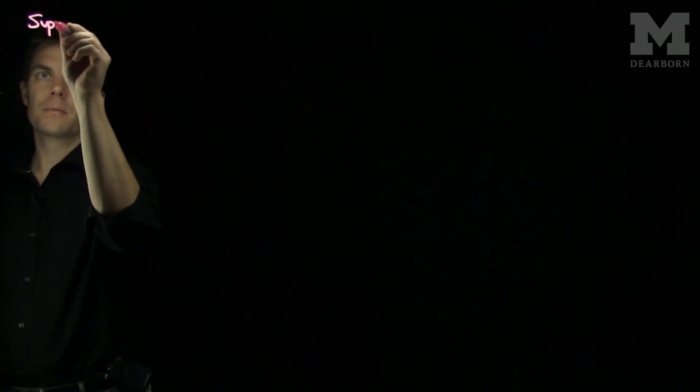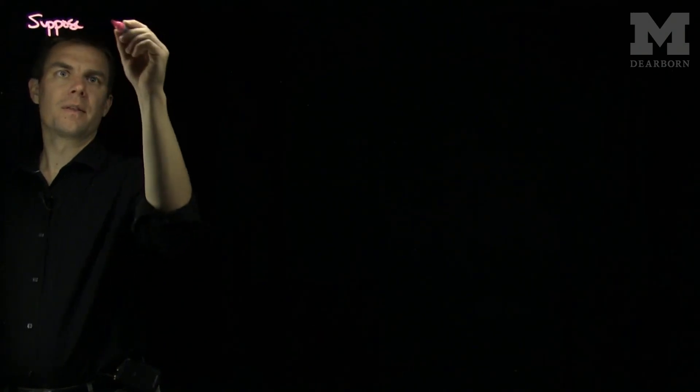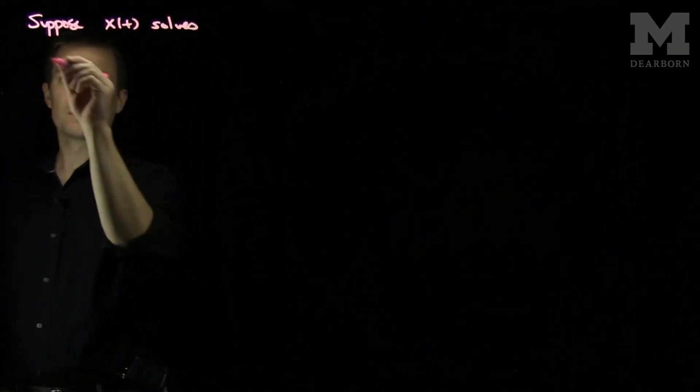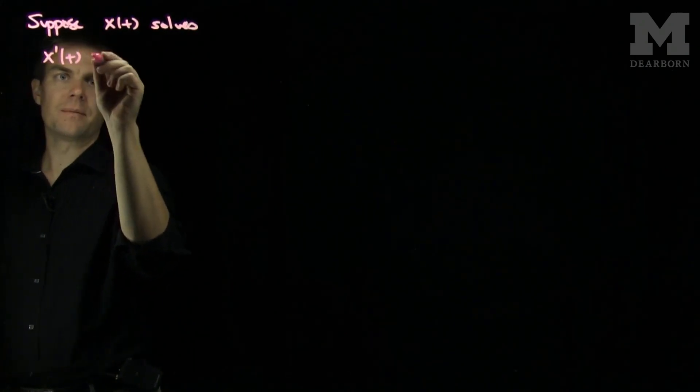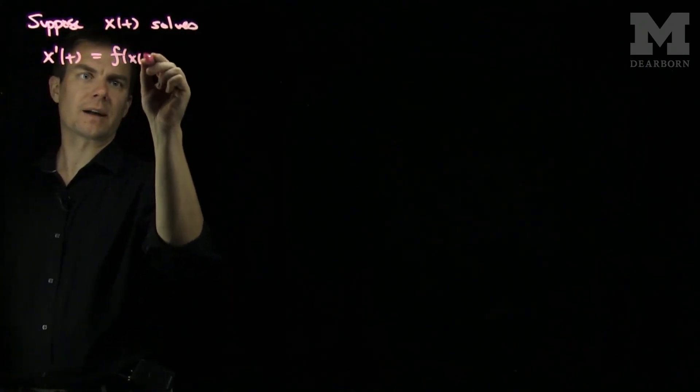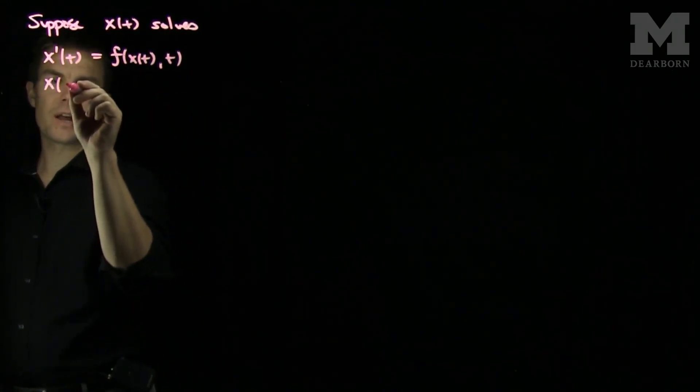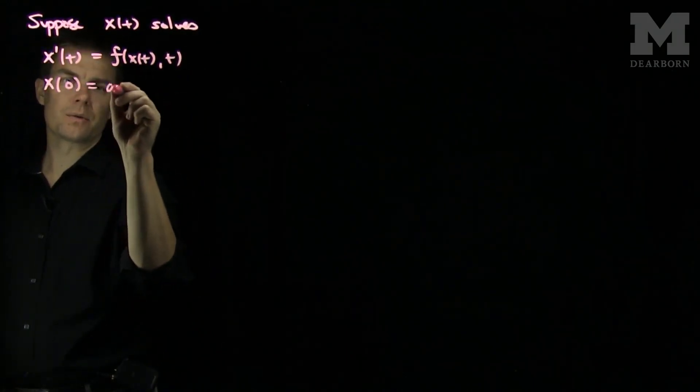Let's suppose that x solves x prime of t is f of x of t, t, with the initial condition that x of 0 is equal to a.